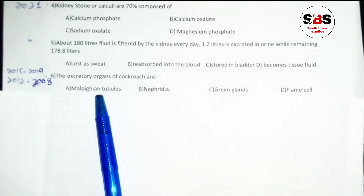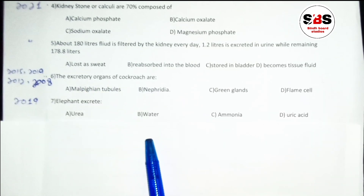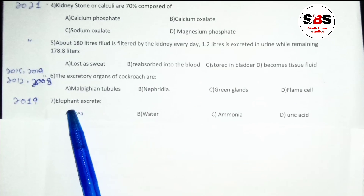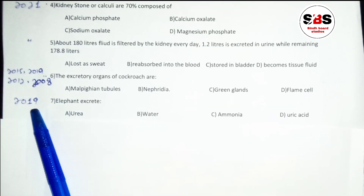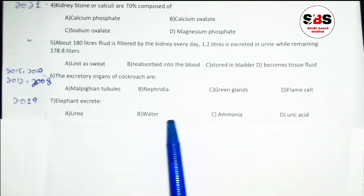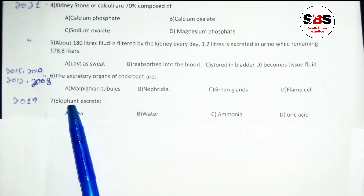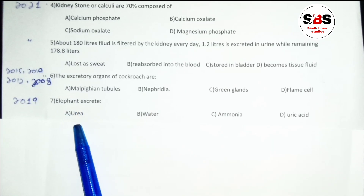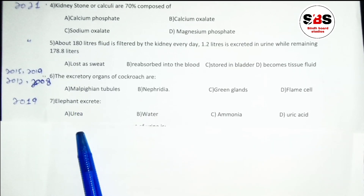Question number 7: what does an elephant excrete? This question appeared in 2019. Options are urea, ammonia, or uric acid. Remember that all mammals excrete urea from their bodies, whether it is humans or elephants. So the correct answer is urea.